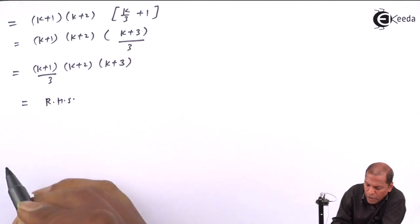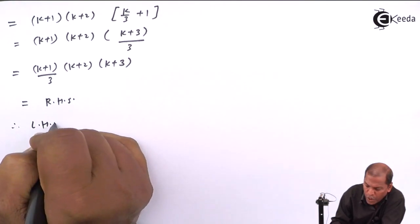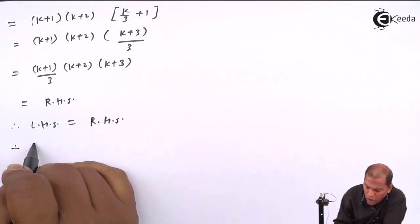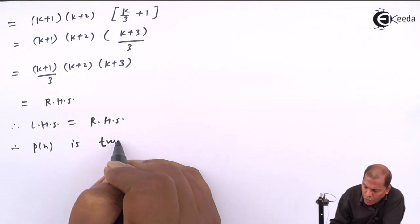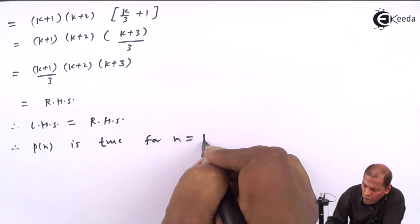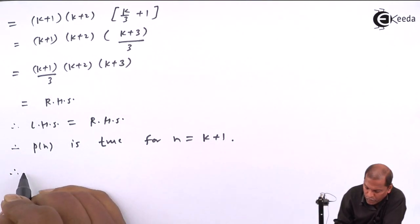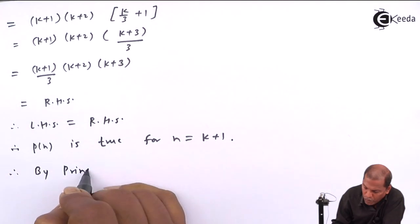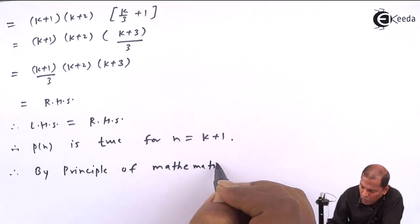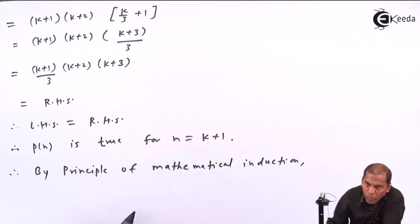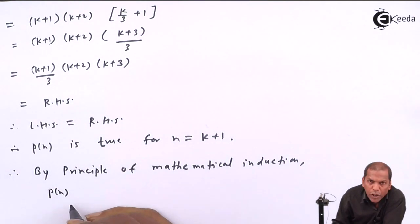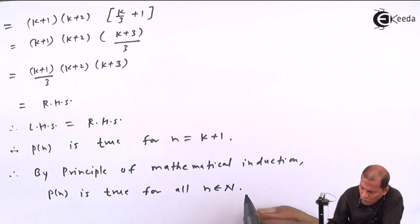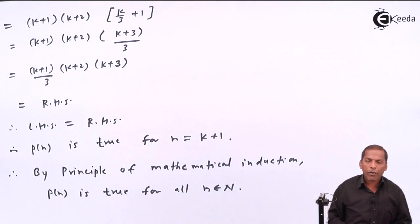This is nothing but the right hand side. So we have proved that LHS = RHS, and therefore P(n) is true for n = k+1. Hence, by the principle of mathematical induction, we can say that P(n) is true for all natural numbers. This is the required solution for the given problem. Thank you.